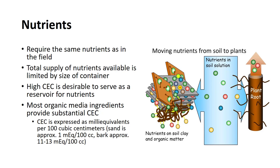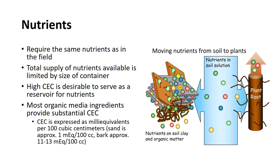Sand is very low in CEC while bark is much higher. The optimum pH for organic mixes tends to be 1 to 1.5 units lower than those generally considered desirable for mineral soils. Liming organic media with a pH above 5.8 is undesirable because it will reduce the availability of phosphorus, manganese, boron, copper, and zinc.